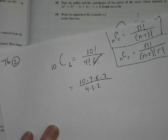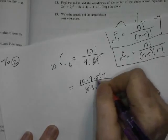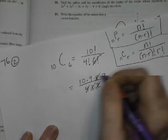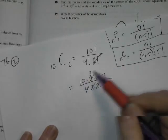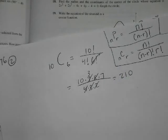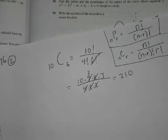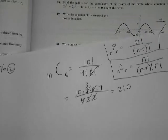And then I like to look at it and see if there's some good simplification. I can take this 4 and this 2 and get rid of the 8. I can take the 3 and get rid of part of the 9. And then 10 times 3 is 30, or 7 times 3 is 21. That's 210. So there's 210 different ways I can choose these groups.